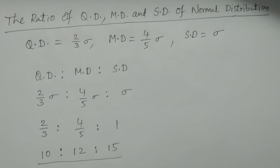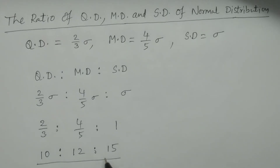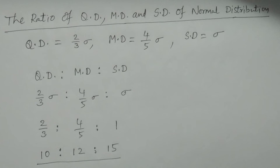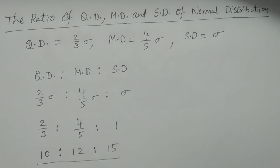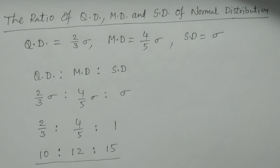The ratio of quartile deviation to mean deviation to standard deviation is 10 to 12 to 15. For any given value, the quartile deviation, mean deviation, and standard deviation will be in the ratios 10, 12, and 15 — this is the ratio for a normal distribution.